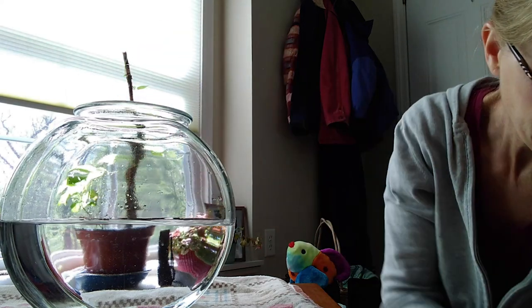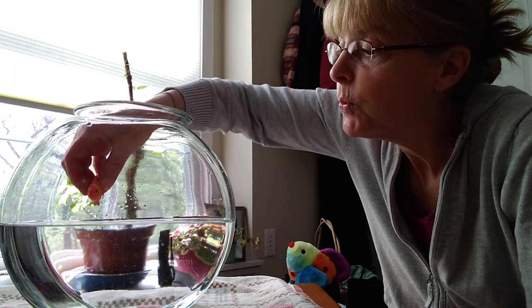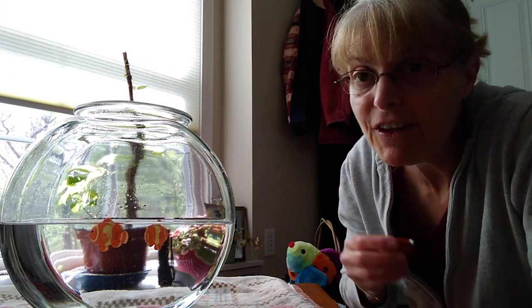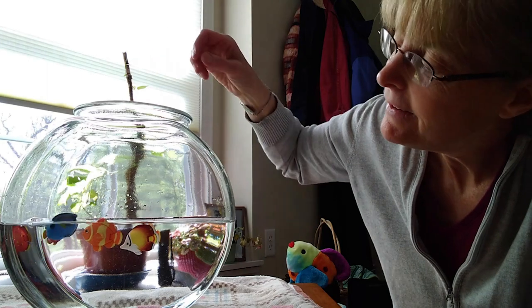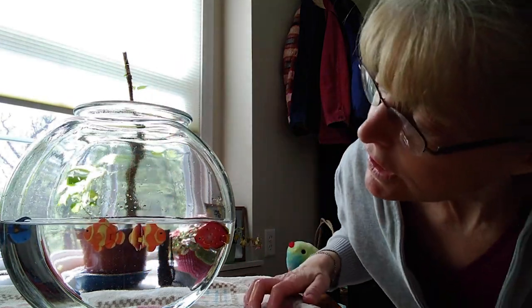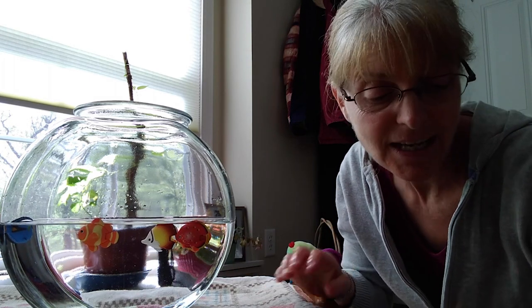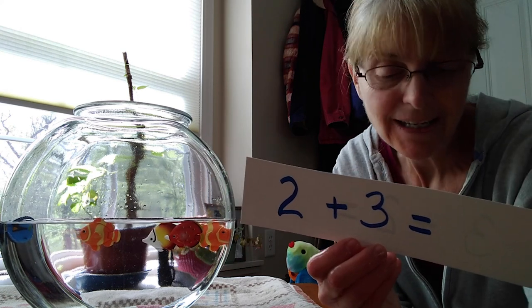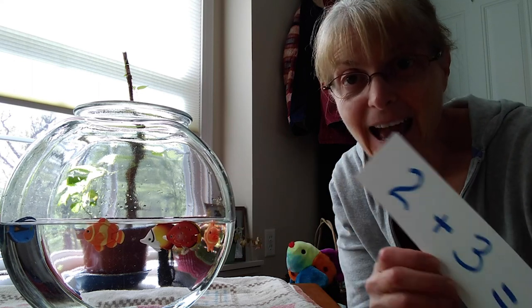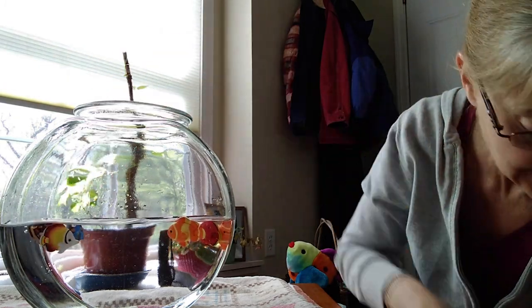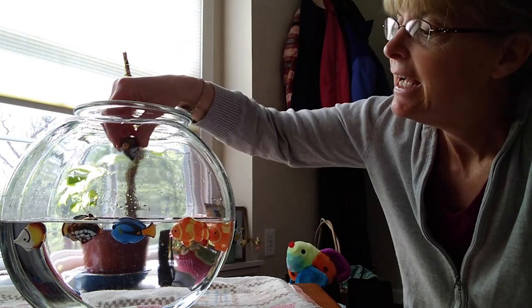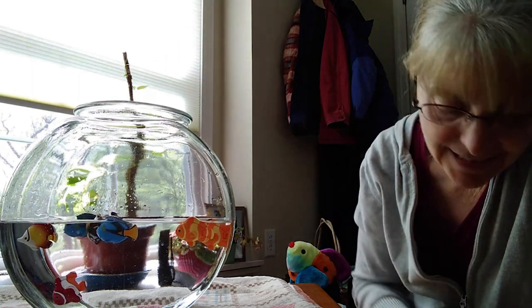Let's do one more. So if we have two fish — one, two, they look like Nemo — can we add three more fish to our bowl? One, two, and three. So two fish plus three fish equals one, two, three, four, five fish. Two fish plus three fish equals five fish. Good counting today. Give me some more friends. So if we have five fish, we'll add another one: six, seven, eight, nine, ten fish in our fish bowl. Pretty cool.